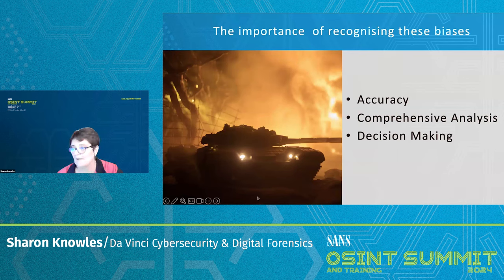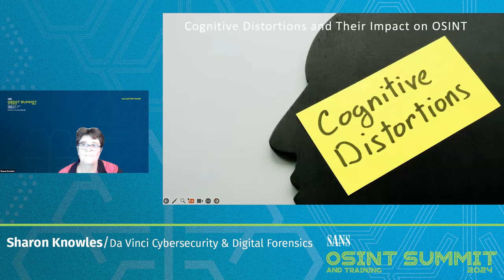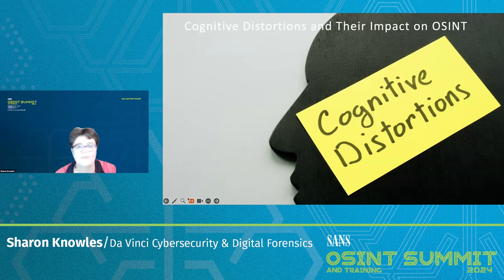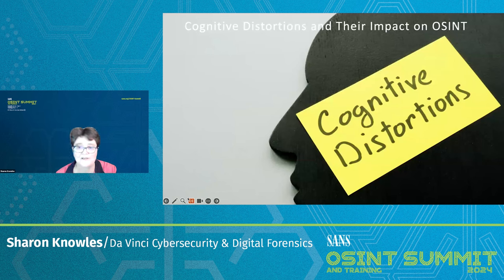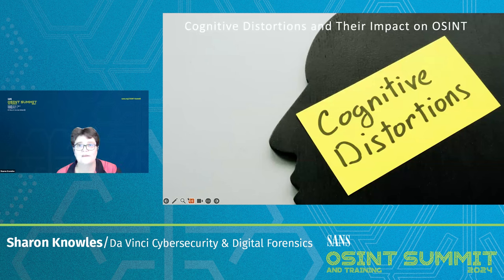A cognitive distortion is an exaggerated or irrational thought pattern involved in the onset or perpetuation of psychopathological states — like depression and anxiety. Cognitive distortions are thoughts that cause individuals to perceive reality inaccurately. An example of this would be: 'I have the worst luck in the world.'